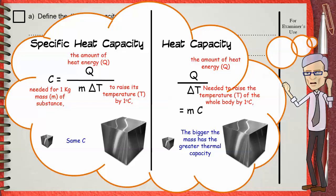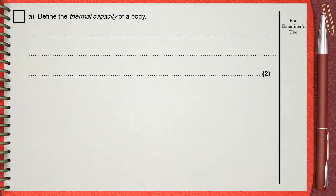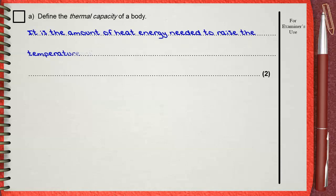So let's go back and define thermal capacity. It is the amount of heat energy needed to raise the temperature of the whole body by 1 degree Celsius — of the whole body, not of 1 kilogram of the body, like the definition of specific heat capacity.